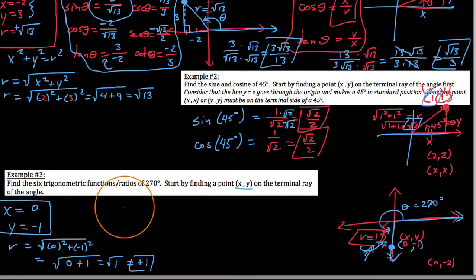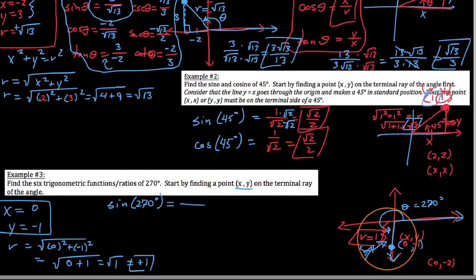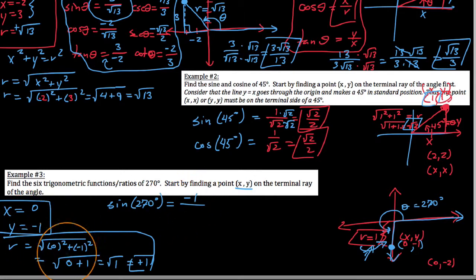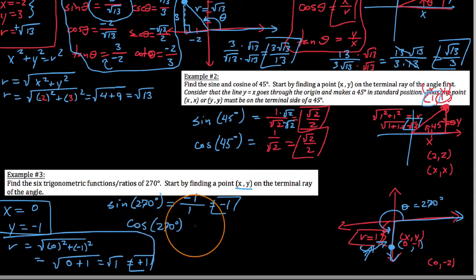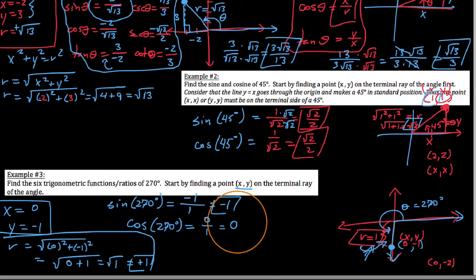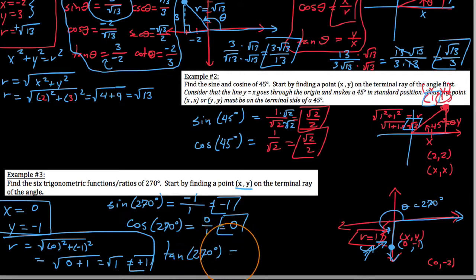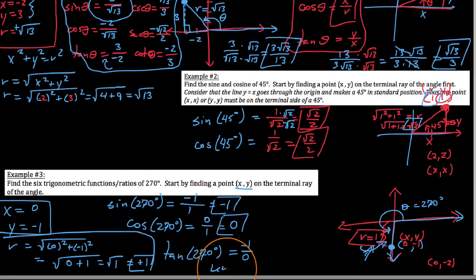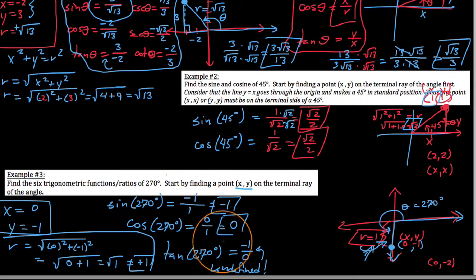Find the six trig functions of 270. Sine of 270 degrees is y over r — we get a y value of negative 1 over an r value of 1, so the sine of 270 is negative 1. Cosine of 270: cosine is x over r — our x value is 0 and r is 1, so this is just 0. Then tangent of 270: the definition is y over x — our y value is negative 1 and our x value is 0. So we get negative 1 over 0, which is undefined. It is sometimes the case that trig functions are undefined, meaning you would have to divide by zero.